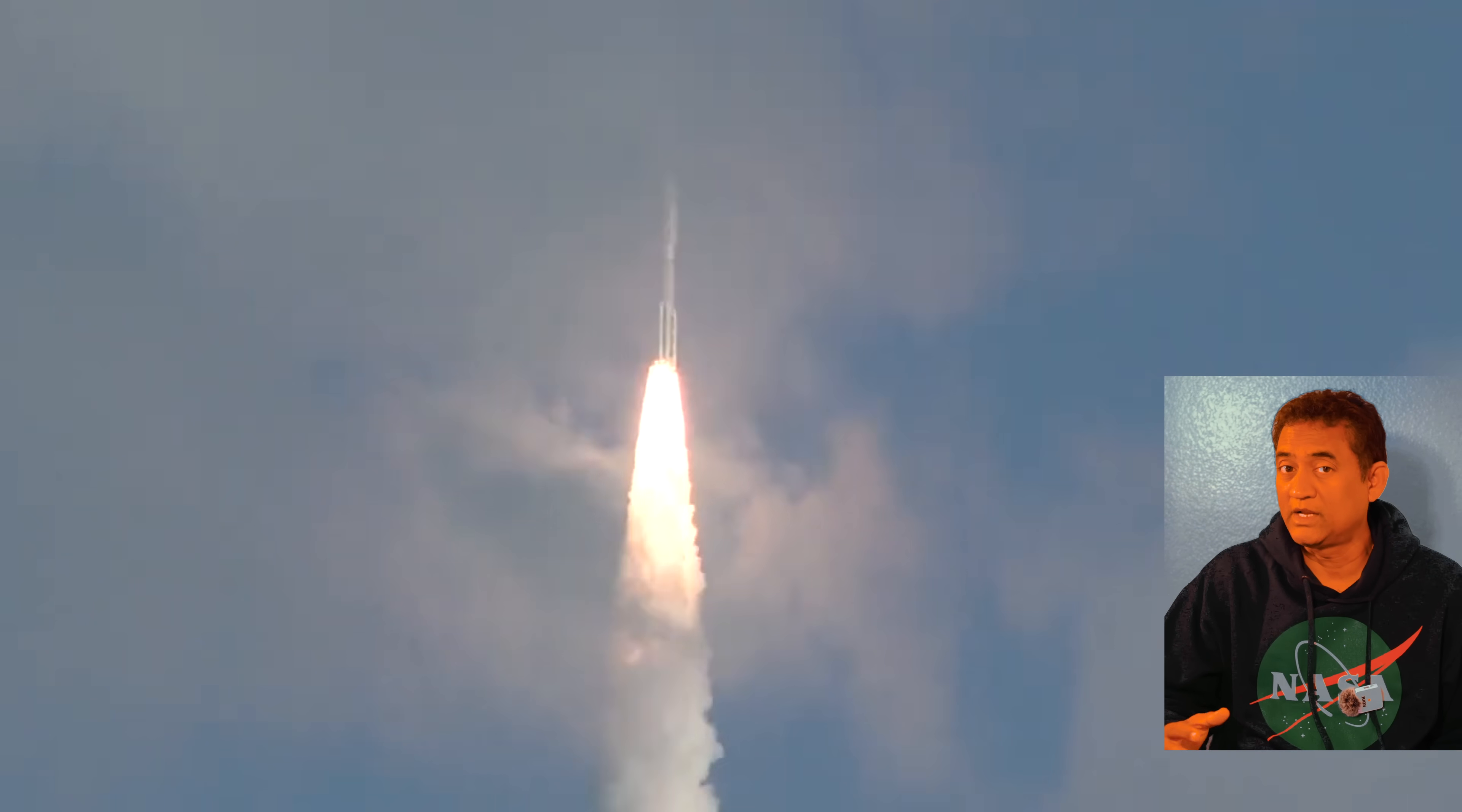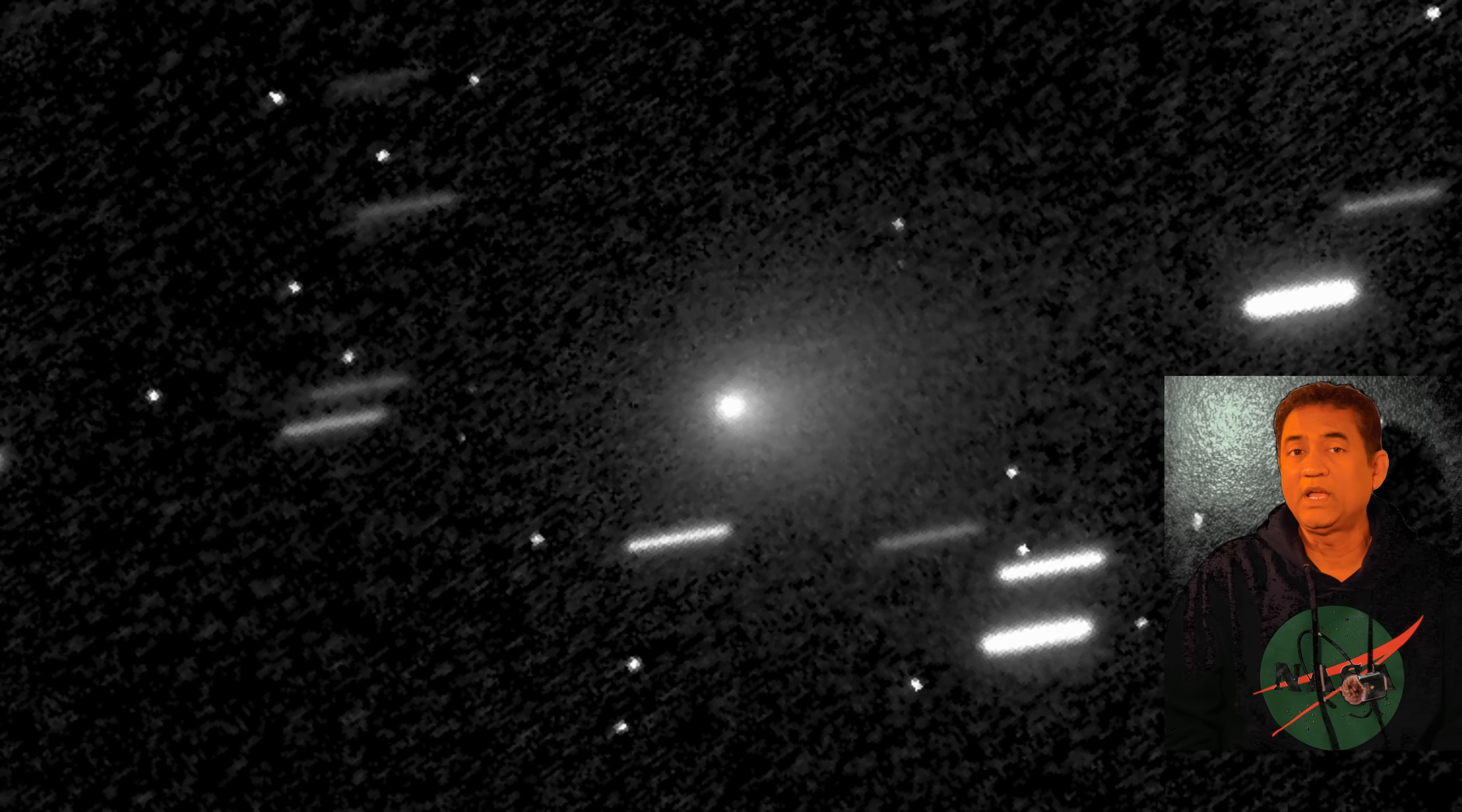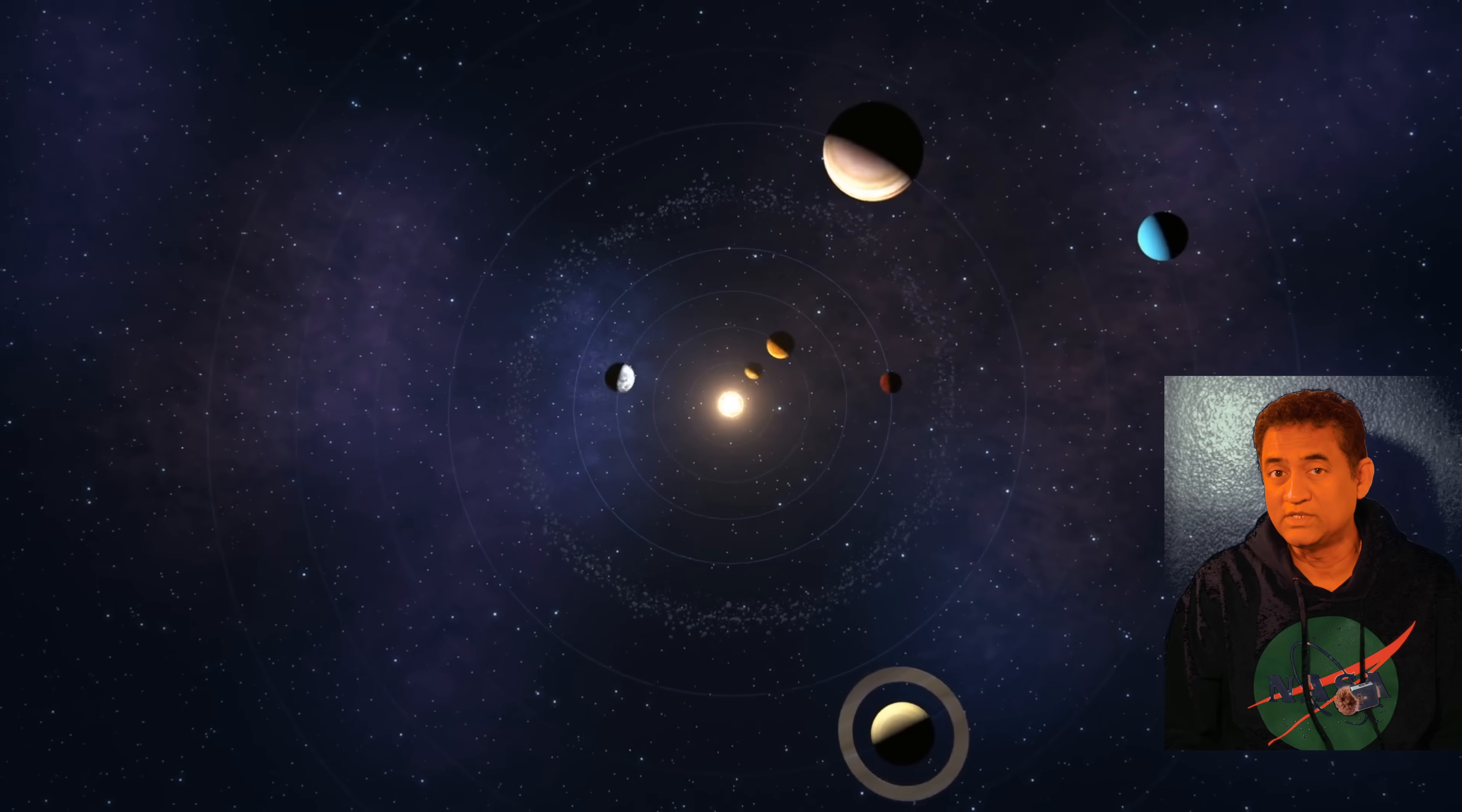Our fastest rockets, like NASA's New Horizons probe, topped around 16 kilometers per second when it left Earth. Now compare that to Atlas. It's moving at 58 kilometers per second right now. That's faster than the planet Mercury, which is the fastest planet in our solar system, orbits around the Sun.